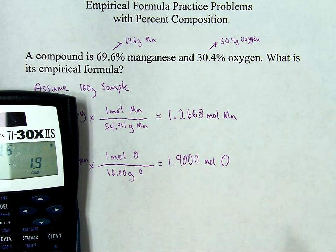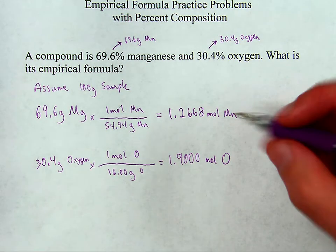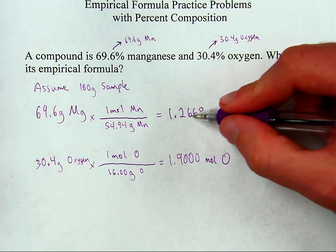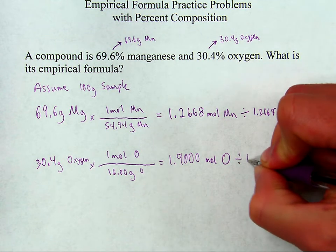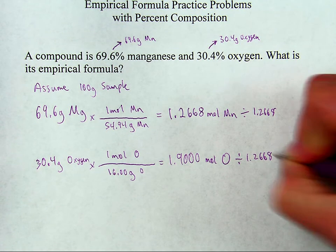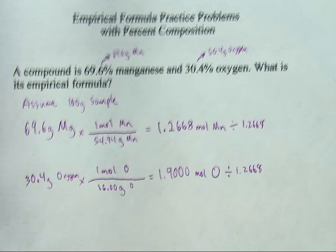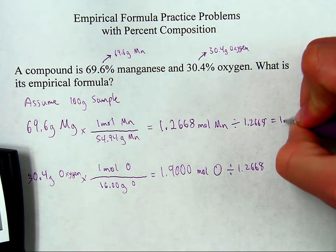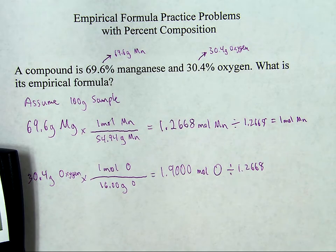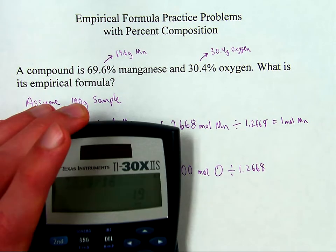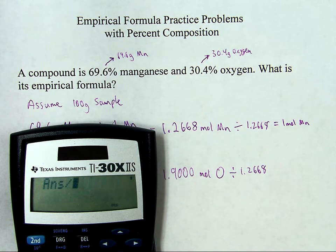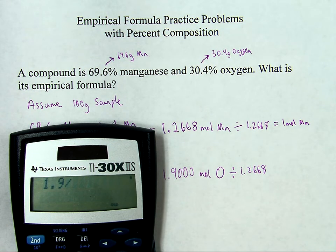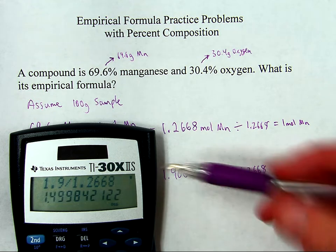And then, as you always do, in order to find the ratio of the moles, I divide by the smaller of the two numbers. So this is the smaller number, so divided by 1.2668, divided by 1.2668. Let's see, well that'll give one mole of manganese. And as for the oxygen, I'll take that 1.9 and divide it, well, okay, make it clear what I'm doing here. Take that 1.9, divide it by 1.2668, okay, the smaller of the two numbers, and I get that.